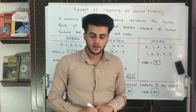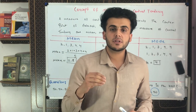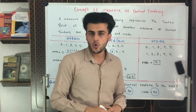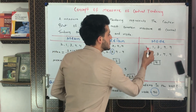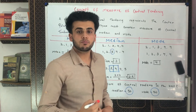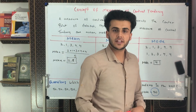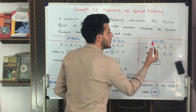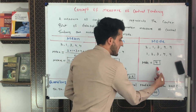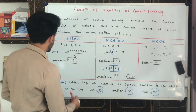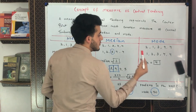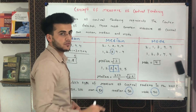The third measure is mode. Mode is the number that repeats most frequently. In our data set — two, one, three, four, four — the number four appears twice while all others appear once, so four is repeated most frequently. The mode is four. To summarize for this data set: mean is 2.8, median is three, and mode is four.